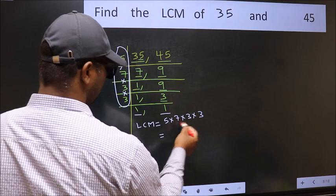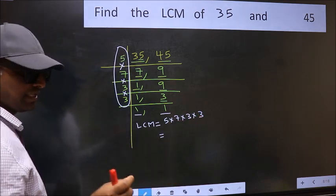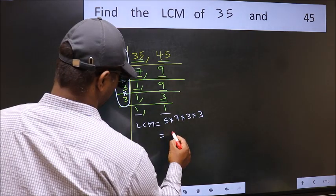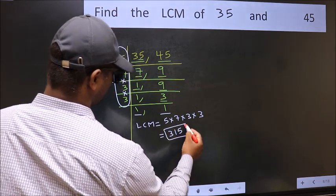When we multiply these numbers, we get 315 as our LCM.